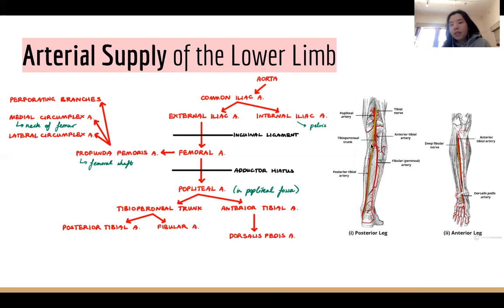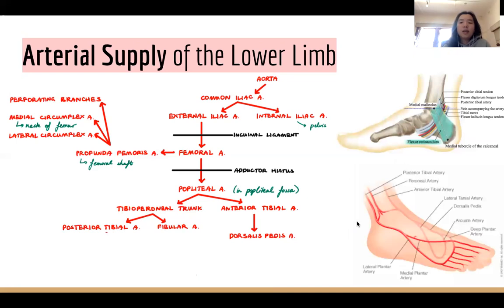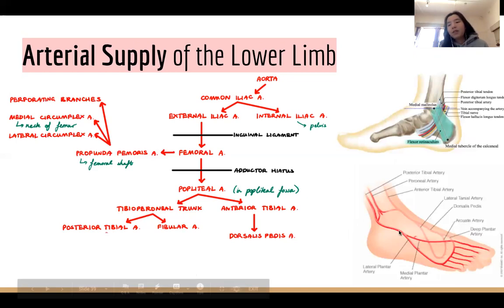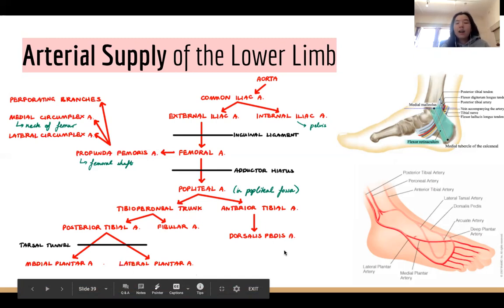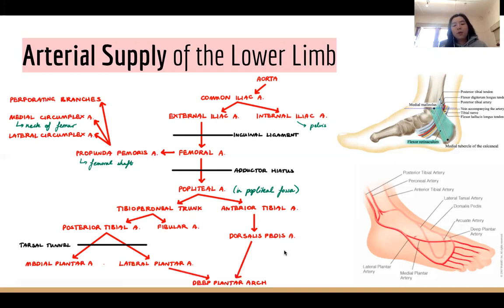The popliteal artery gives off the anterior tibial artery and the tibial peroneal trunk. The tibial peroneal trunk gives off the posterior tibial artery (more medial) and the fibular artery (more lateral, as the fibula is the lateral bone). The anterior tibial artery continues down to become the dorsalis pedis artery — a good landmark being the extensor hallucis longus tendon, with the artery lying lateral to it in most people. The posterior tibial artery runs medially with the tibial nerve through the tarsal tunnel, splitting into medial and lateral plantar branches. Finally, the dorsalis pedis and lateral plantar arteries anastomose to form a deep plantar arch supplying the foot.